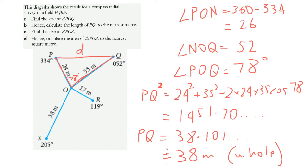So that's the first thing we need to be able to do there, using our cosine rule to find that length for part B, which we've done using that angle from part A.